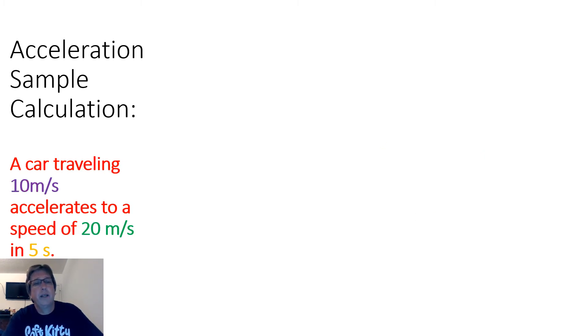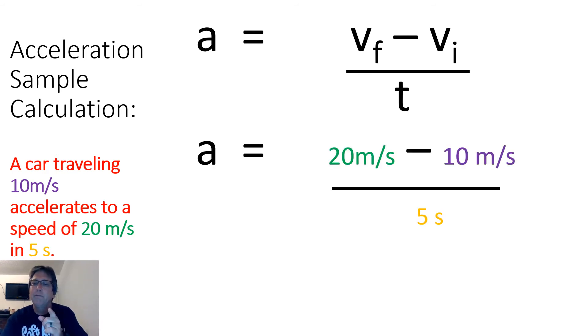Let's look at a second calculation. We have a car traveling 10 meters per second, and it accelerates up to 20 meters per second and does it in just five seconds. What's the first thing? You got it. Write the formula. Then, of course, fill it in. So our initial velocity, 10. Final, what we get up to is 20. And the time, 5. And notice I have units on every number. So 20 minus 10 is what? 10. 10 divided by 5? 2. So the answer is 2 meters per second per second, or 2 meters per second squared.